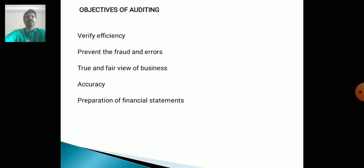Main Advantages of Auditing. The following objectives of auditing are as follows. First one: Verify efficiency. Next: Prevent the fraud and errors. Third one: True and fair view of business. Next one: Accuracy. Next one: Preparation of financial statements.